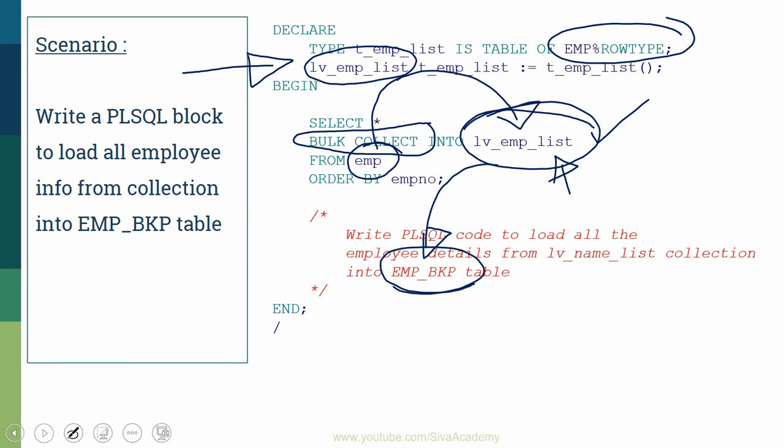How do we implement this? We want to read and insert information from the collection into the employee backup table. The easiest approach is to iterate through the collection row by row and insert into the table using a FOR loop. First, let us implement using the FOR loop and understand its problem. Then we will implement the same logic using FORALL and compare the performance difference.